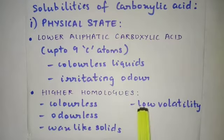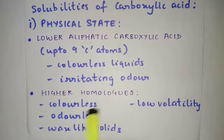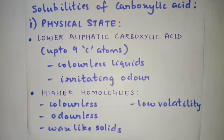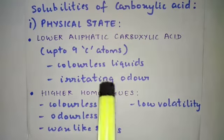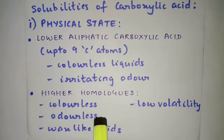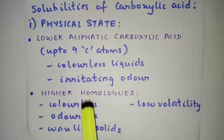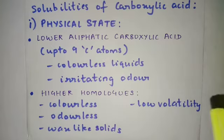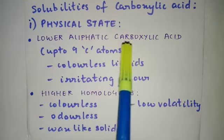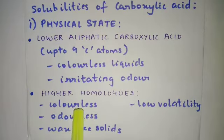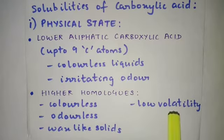The higher homologues — homologues are compounds that belong to the same family, here the carboxylic acid family. For example, formic acid, then acetic acid, then propanoic acid — the number of carbon atoms goes on increasing one by one. But each individual member is known as a homologue. Higher homologues, meaning higher aliphatic carboxylic acids, are colourless, odourless, wax-like solids and they have low volatility.